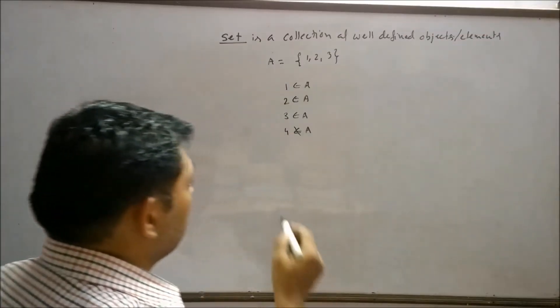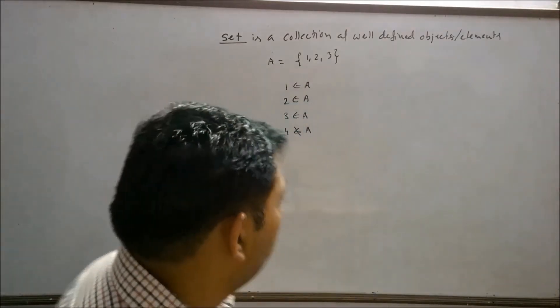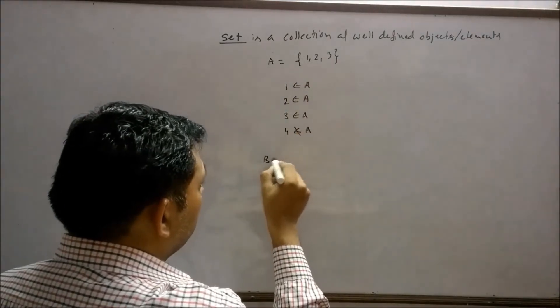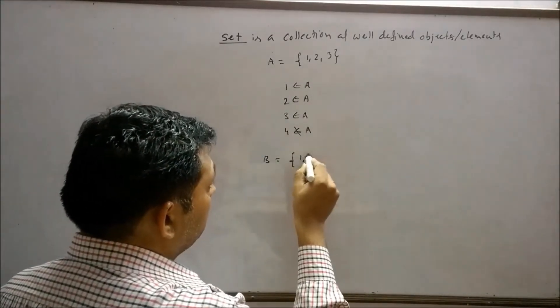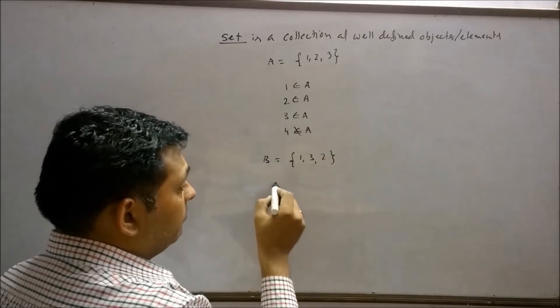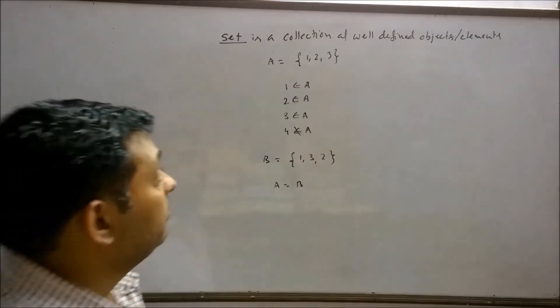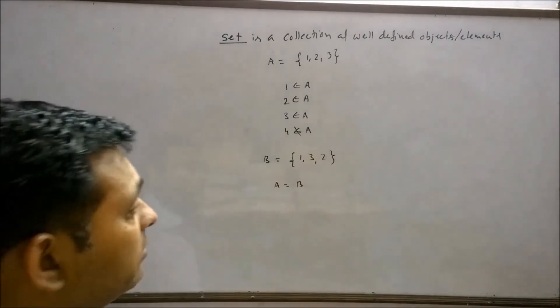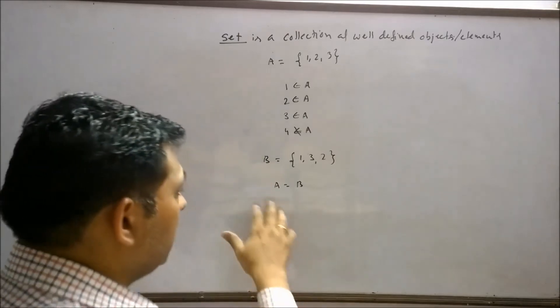The next thing in the set is, we can arrange elements in any order. For example, if somebody says set A equals to 1, 2, 3, and someone says set B equals to 1, 3, and 2. A and B here are equal sets. Since set A contains 1, 2, 3 elements, and set B contains 1, 3, 2 elements. Arrangement of elements can be in any order in sets. So, A and B are equal sets.